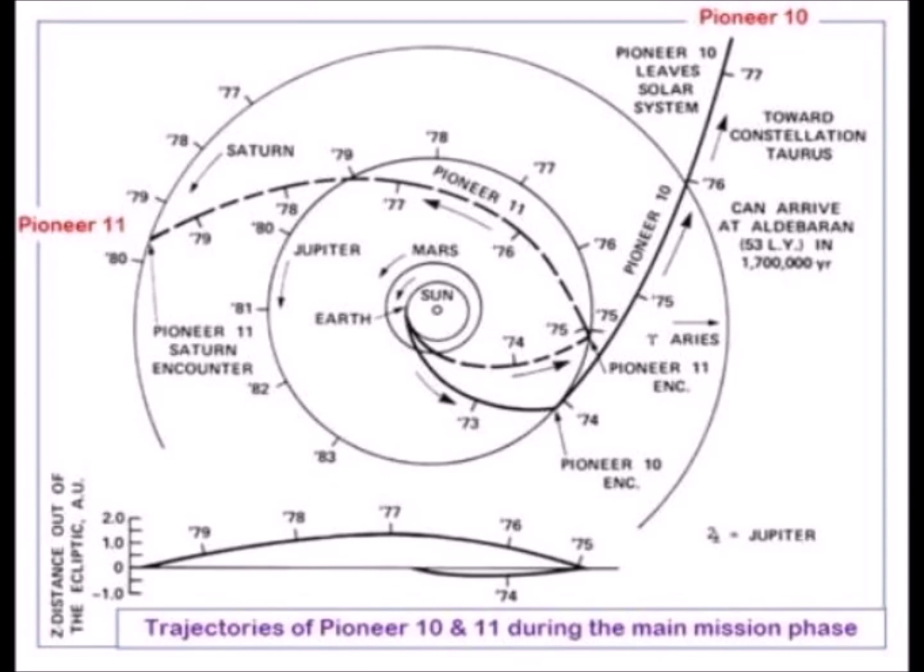Its speed relative to the ether is the same as that of Pioneer 10 since it is also carried away by the whirlpool of the sun. It also moves away from the sun less quickly than in Keplerian calculations.